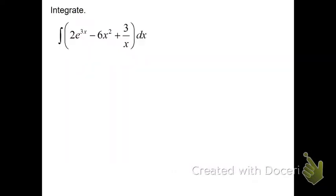So quick review of things that you should already know. Hit pause, test yourself, see if you got this. Some quick and easy ones just to get you back on track. This is 2e to the 3x divided by the derivative of the inside, so divided by 3.